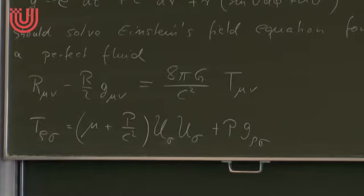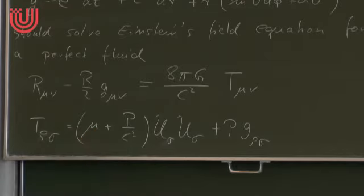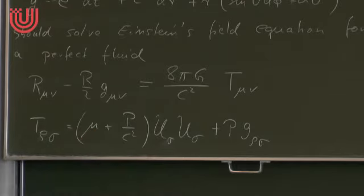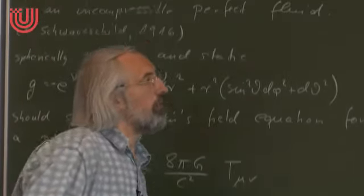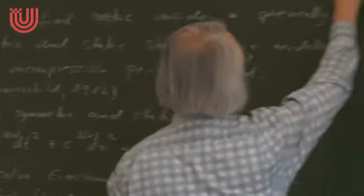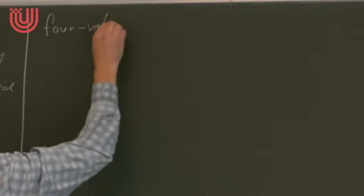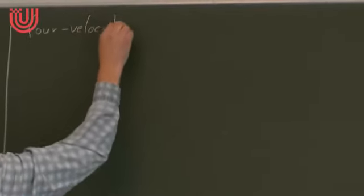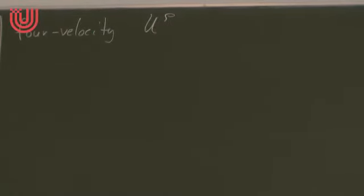The four-velocity u^ρ is a flow field. We want to consider a static situation, so the individual volume elements of the fluid should not move in space — in the spacetime they should move along t-lines. This means in these coordinates u has only a t-component: u^ρ ∝ δ^ρ_t.